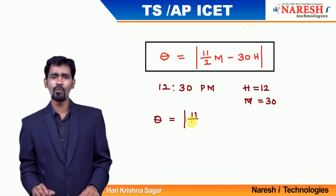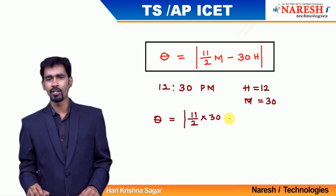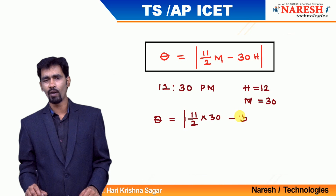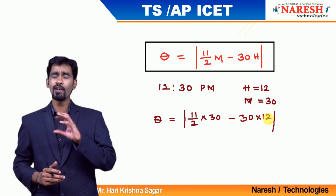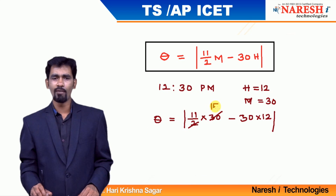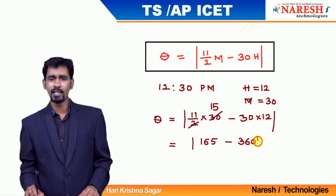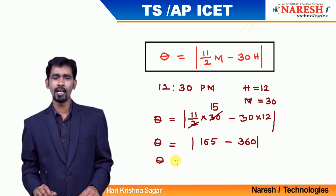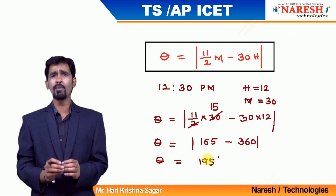So 11/2 into m — the m value is 30 — giving 11/2 into 30, minus 30h where h is 12, so minus 30 into 12. Solving this: 11/2 into 30 gives 165, and 30 into 12 gives 360. So 165 minus 360. I have applied a modulus because even if you get a negative value, an angle cannot be negative — ignore the negative sign. The modulus gives theta equal to 195. So 195 degrees is the angle between the minutes and hour hand.